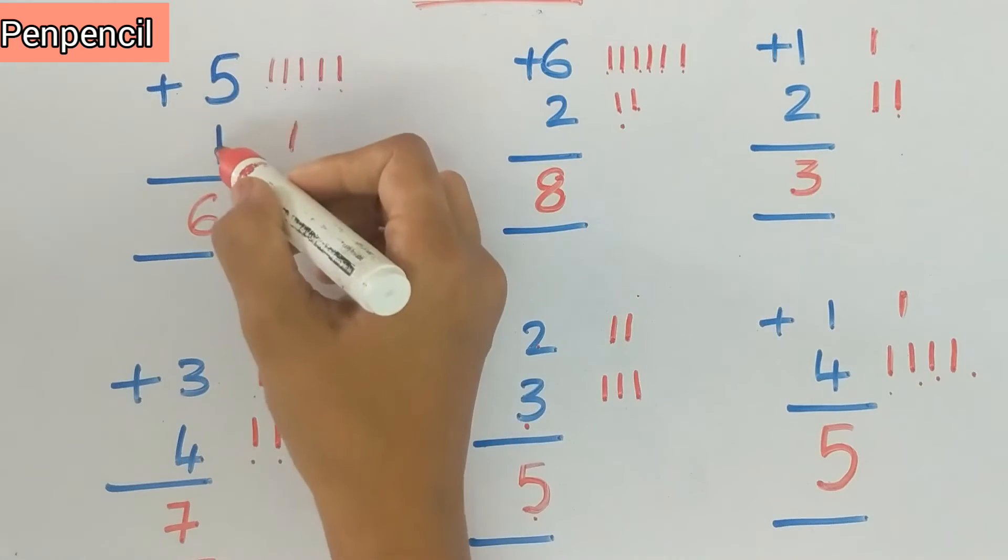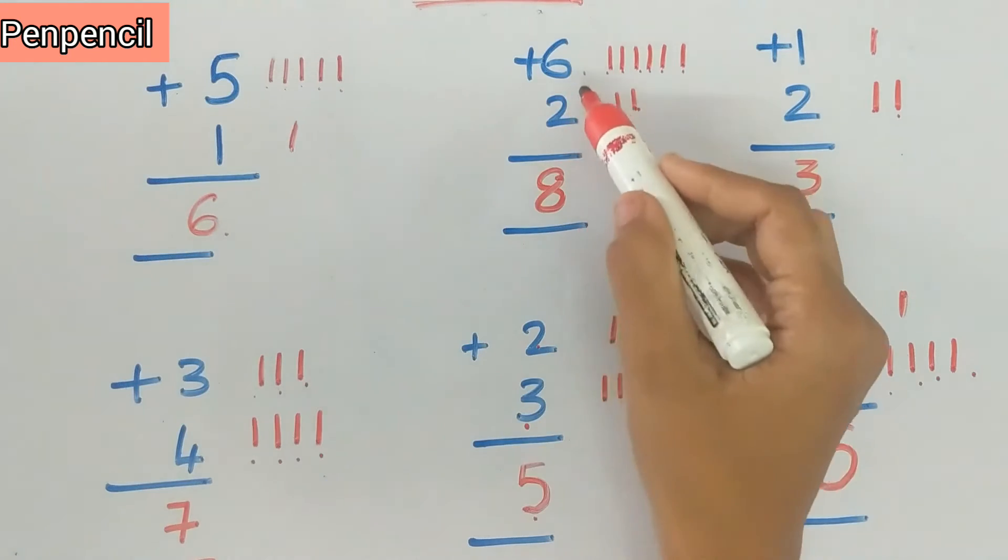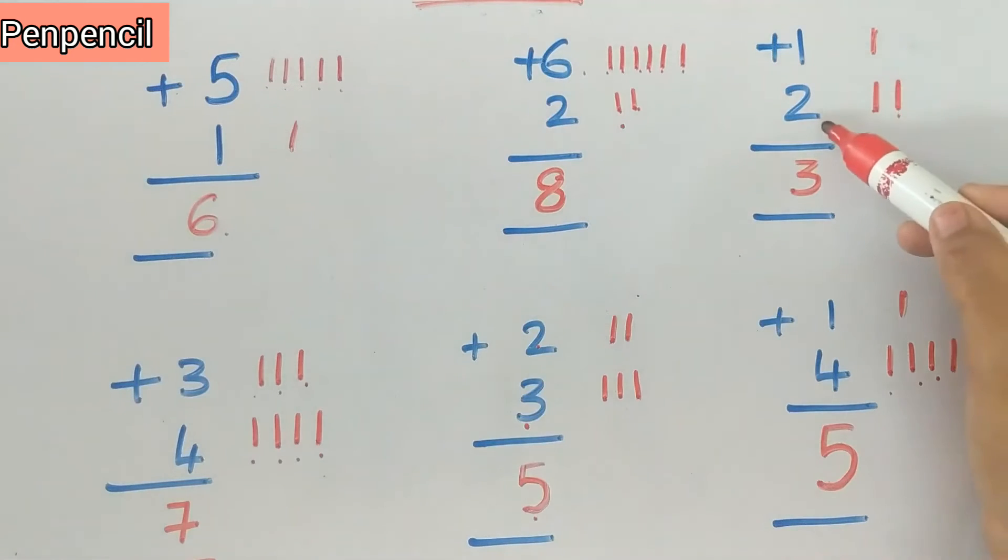5 plus 1 is 6. 6 plus 2 is 8. 1 plus 2 is 3. 3 plus 4 is 7. 2 plus 3 is 5. 1 plus 4 is 5. In this way we will be adding in the old method.